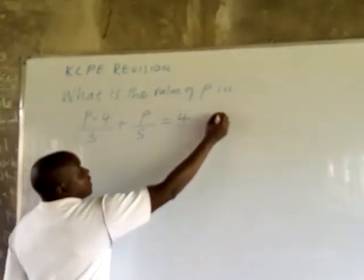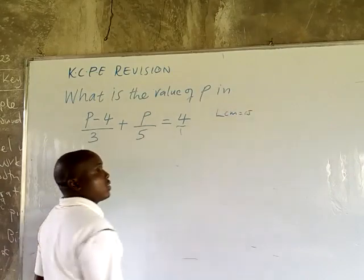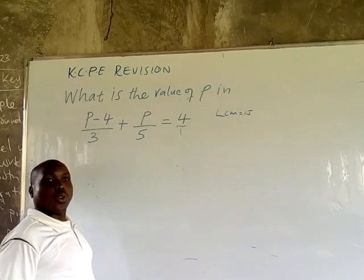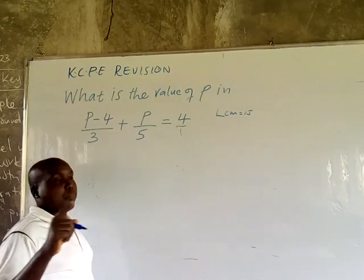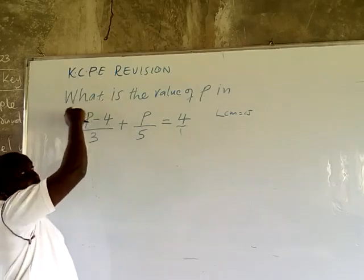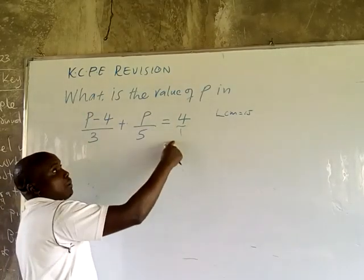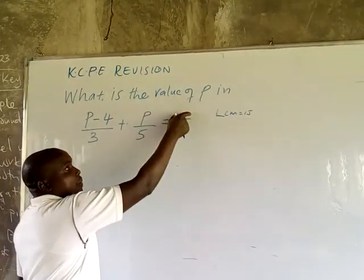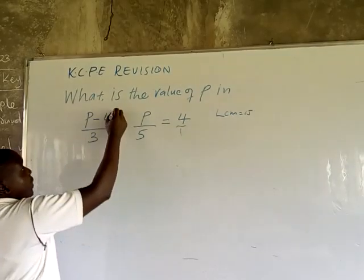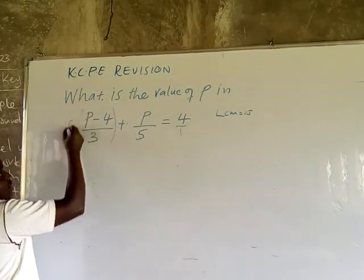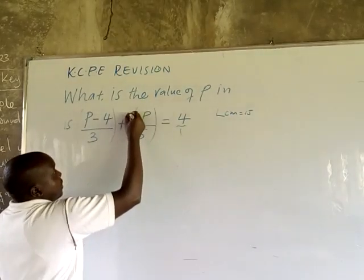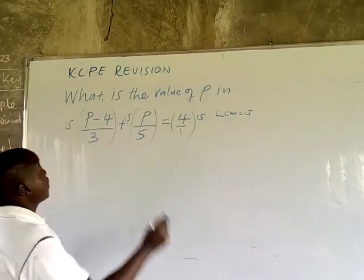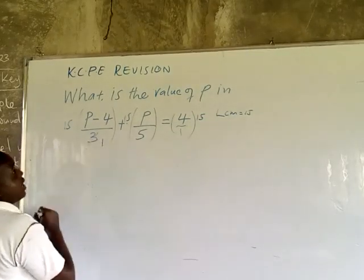So the LCM is 15. After finding the LCM of the denominators, the next step is to multiply every term by the LCM. The first term, the second term, and the third term — multiply each term by 15.